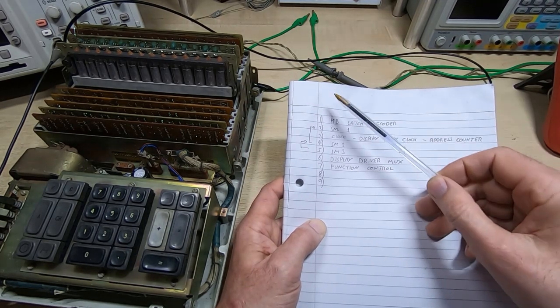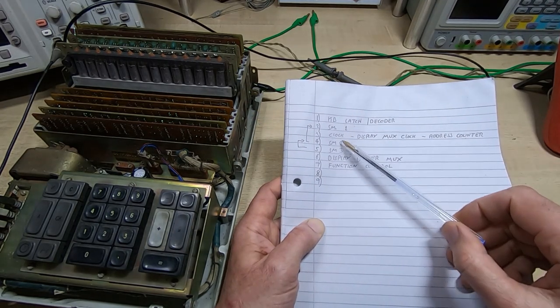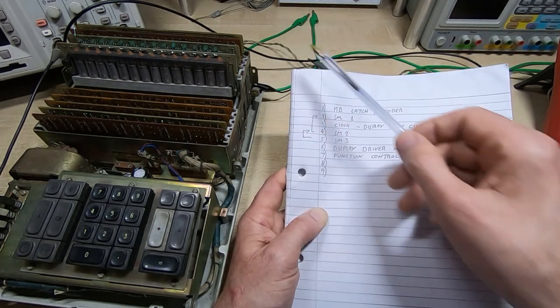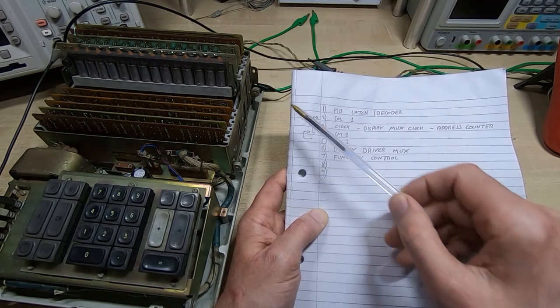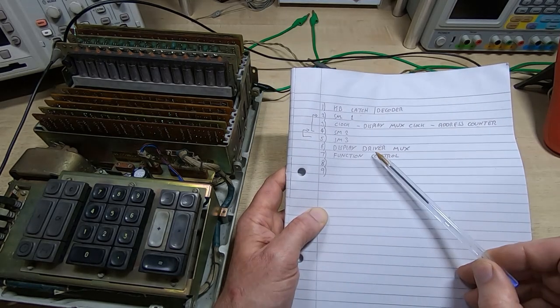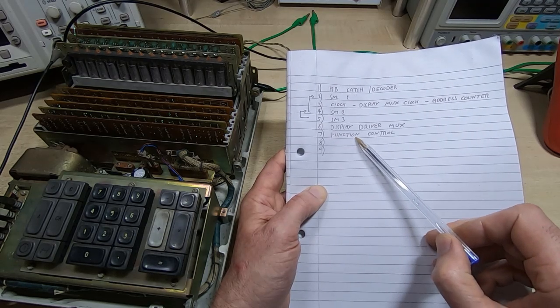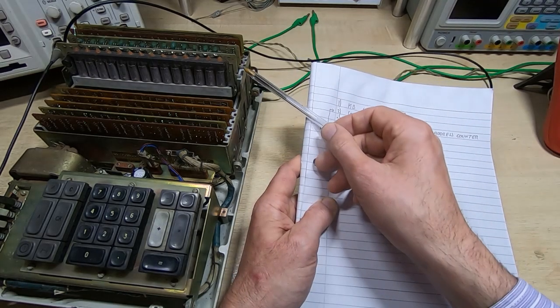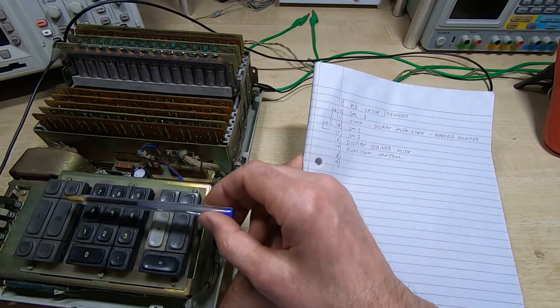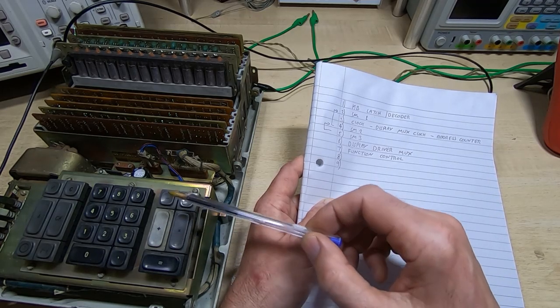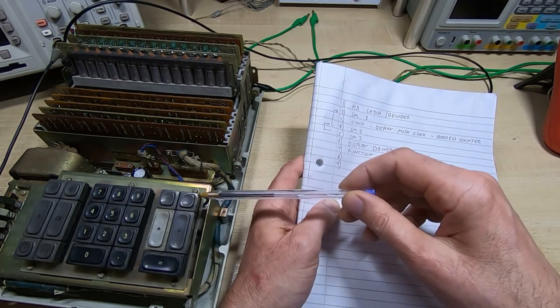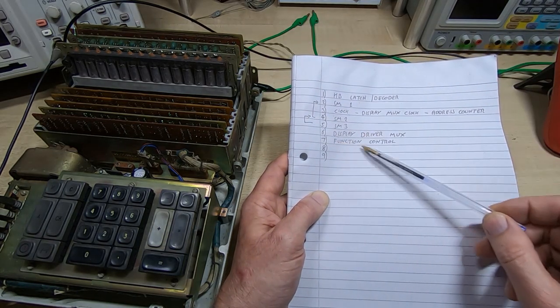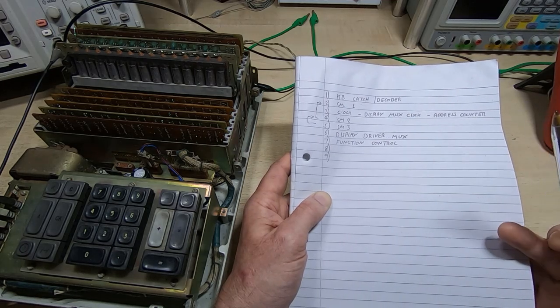I'm assuming that the first was the display multiplexer and sure enough when I traced it through those lines went through to the display digit drivers. Then the six bit binary counter I'm assuming is the address counter for the data. Then three of the cards, two, four and five, seem to be kind of inter, there's quite a lot of connections between them, so I think they're part of the state machine control.